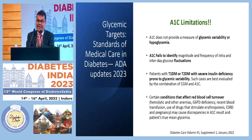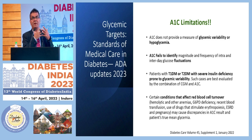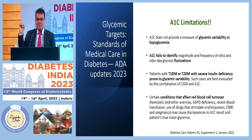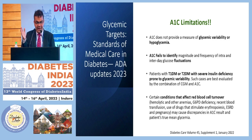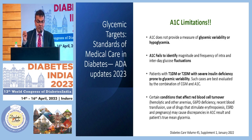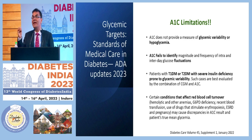Regarding guideline recommendations: as per ADA 2023, A1C does not provide a measure of glycemic variability or hypoglycemia, so you cannot depend only on A1C. A1C fails to identify the magnitude and frequency of intra- and inter-day fluctuations. Patients with type 1 and type 2 diabetes with severe insulin deficiency who are prone to more glycemic variability are best evaluated by a combination of CGM and A1C.